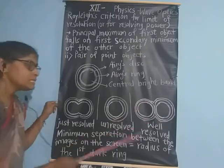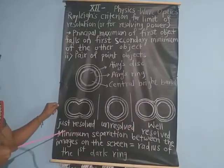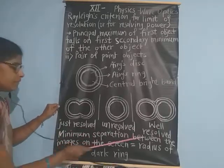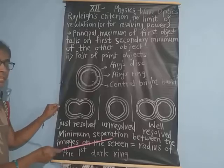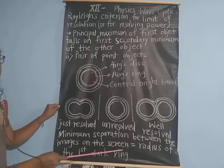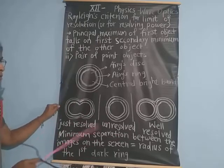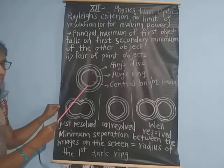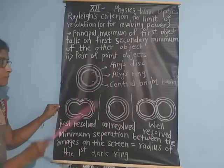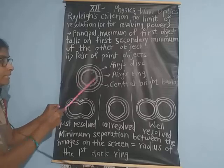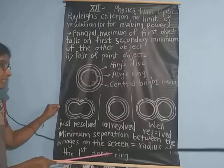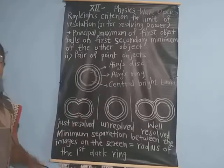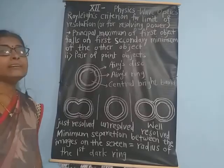The condition for just resolution is: if the minimum separation between the images on the screen is equal to the radius of the first dark ring — which is the Airy disc's first dark ring radius — then there will be just resolution. This radius is called the limit of resolution or minimum separation between the images on the screen.